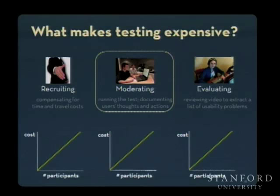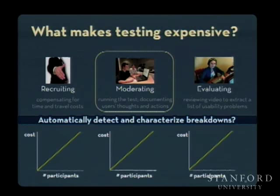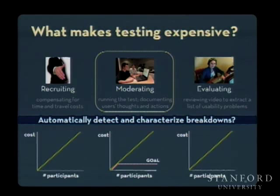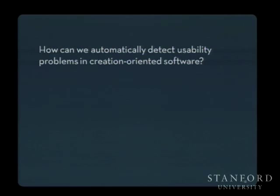My dissertation work has focused on the moderation phase. The key question is: what if we could automatically detect and characterize breakdowns that happen in creation-oriented software? If we could do this, we wouldn't need a human moderator watching over your shoulder one-on-one with each participant. With enough computers, you could effectively run everyone in parallel through the test, and you could also reduce evaluation costs by focusing evaluators' attention on the parts of the video that include actual breakdowns.